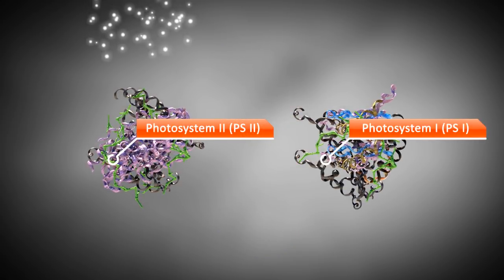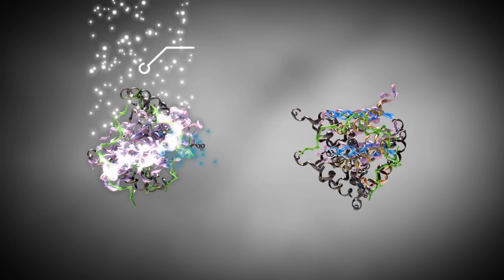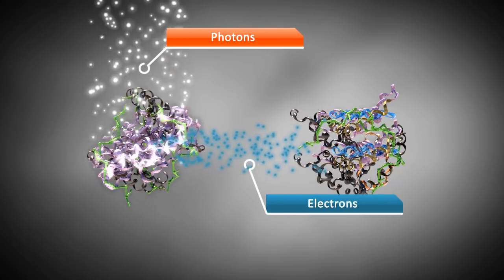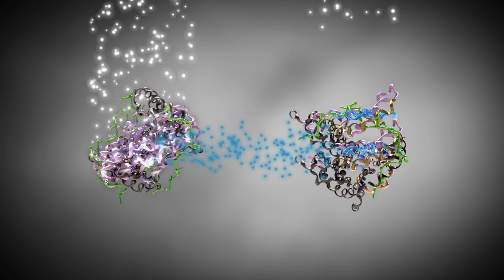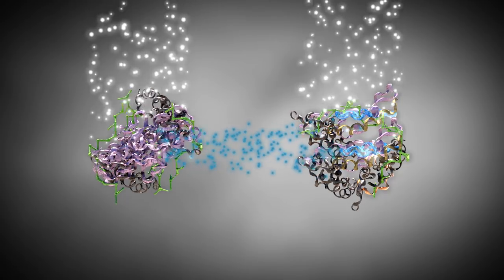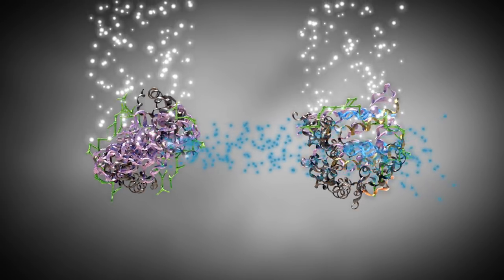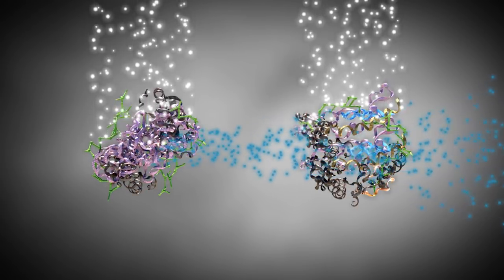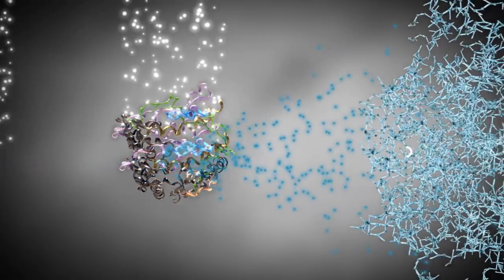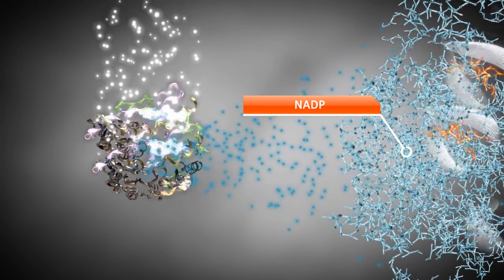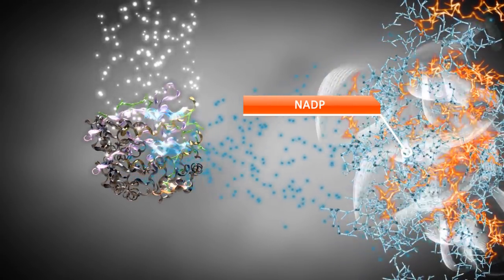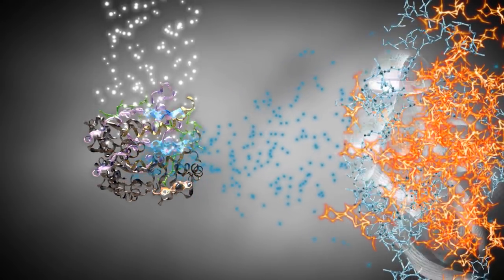The electrons that are transported from PS2 to PS1 are used to balance the loss of electrons in PS1 because PS1 absorbs light and this results in the oxidation of PS1 and the release of electrons. Electrons coming from PS1 are transported through an electron transport chain to their final electron acceptor, NADP, creating NADPH.